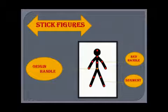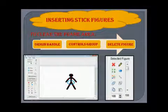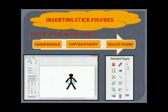Now we will move to our next topic: inserting stick figures. You will find some ready-made stick figures in Pivot Animator. You can use these figures to create your animations, but you need to load them before you can use them. To clear the frame area, first click on the orange dot, then from the Figure Controls group click on the Delete Figure icon.